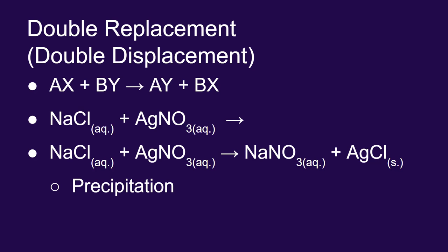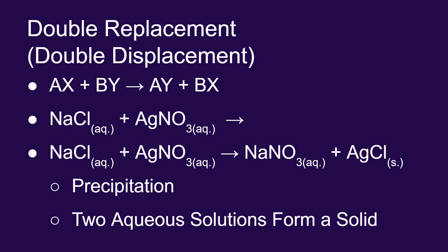We define precipitation as having two aqueous solutions forming a solid. The aqueous sodium chloride and the aqueous silver nitrate are forming a solid silver chloride. That is a precipitation reaction.